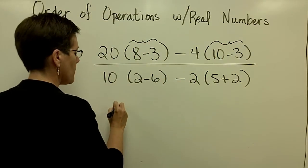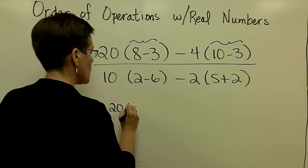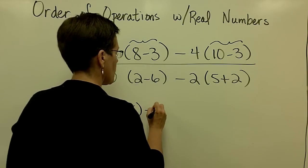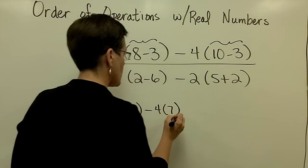So 8 minus 3 is 5. So in the denominator, I'll have 20 times 5 minus 4. And 10 minus 3 is 7. 4 times 7.